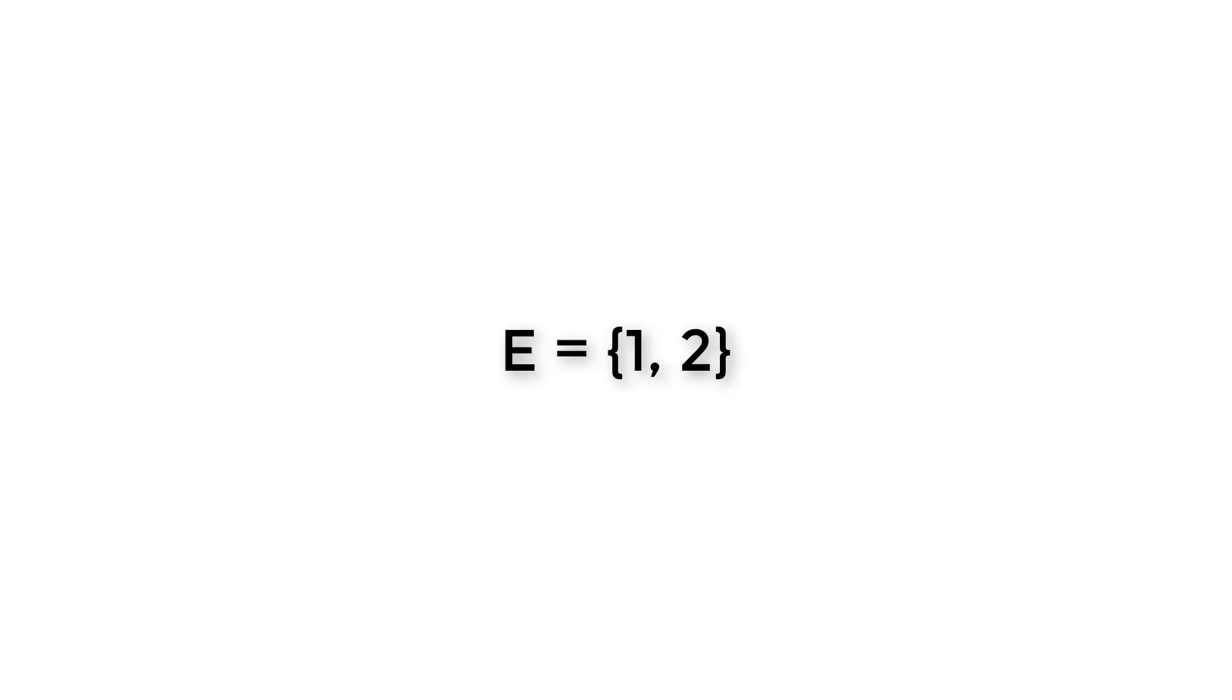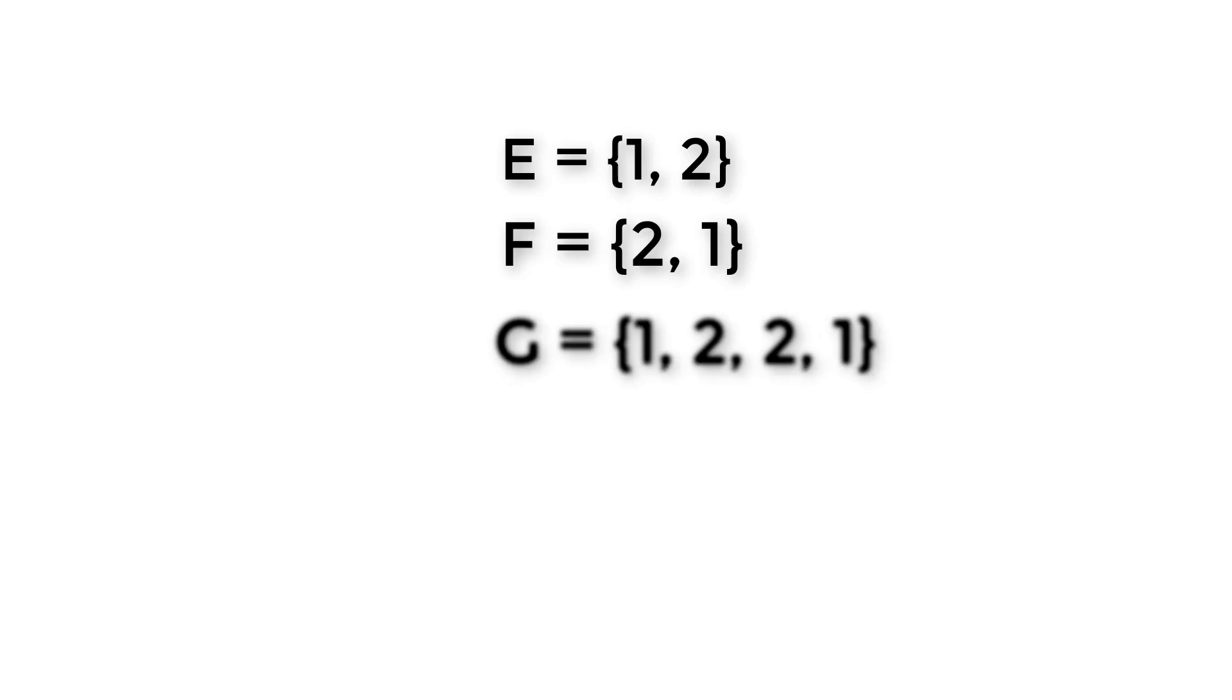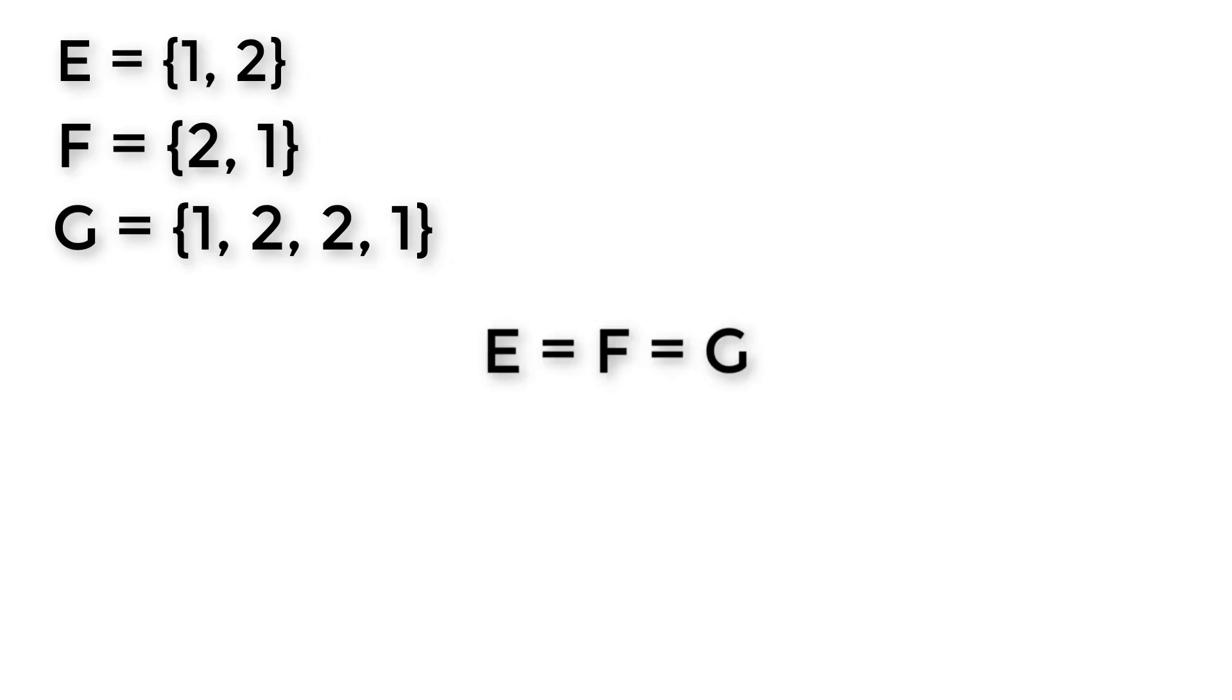Now let us take two more sets: F equals {2, 1} and G equals {1, 2, 2, 1}. If I say E equals F equals G, will you agree? Do you think I'm making a mistake here? In set theory, this relation is correct. E equals F equals G. Let's see how E, F, and G are the same.